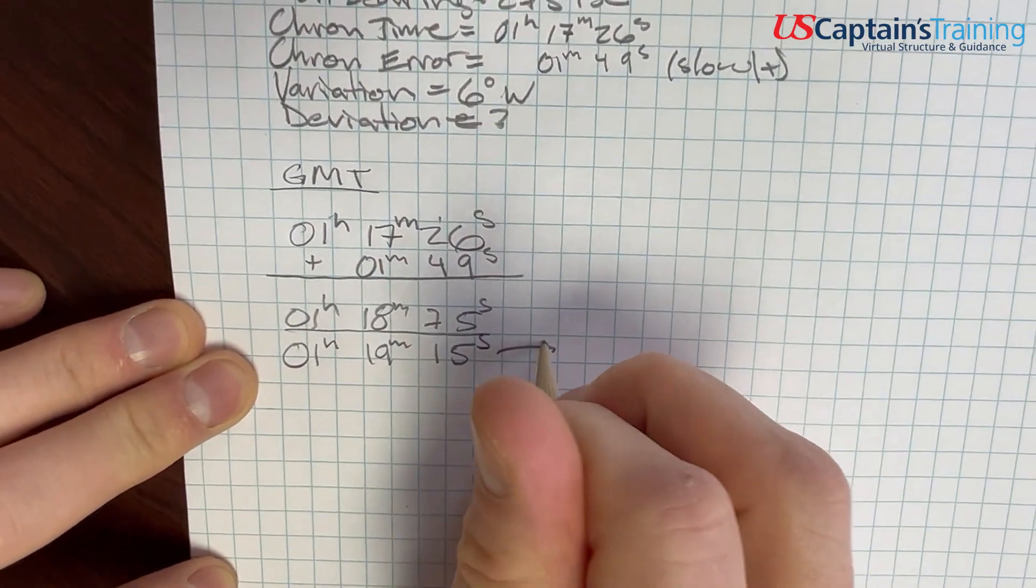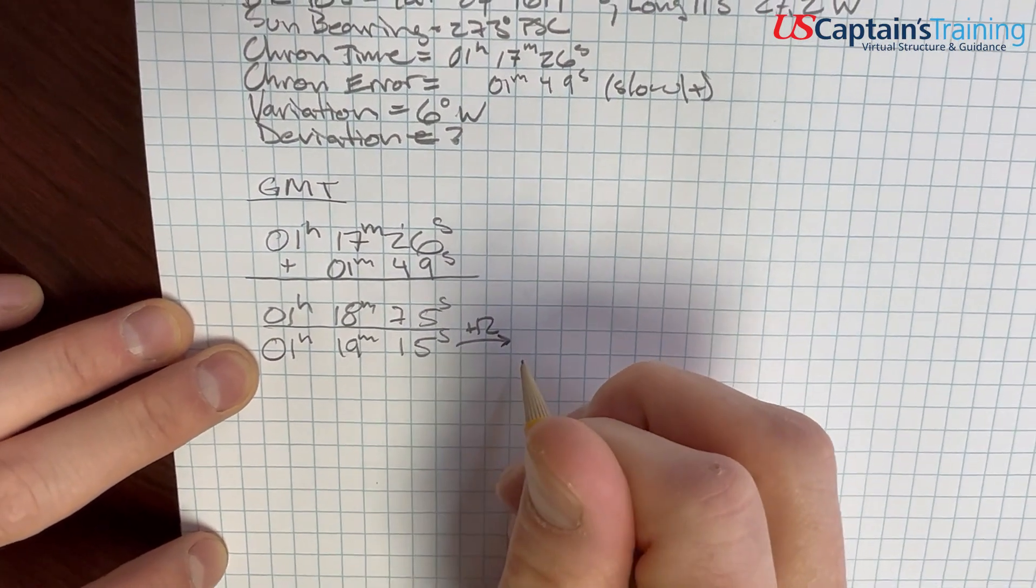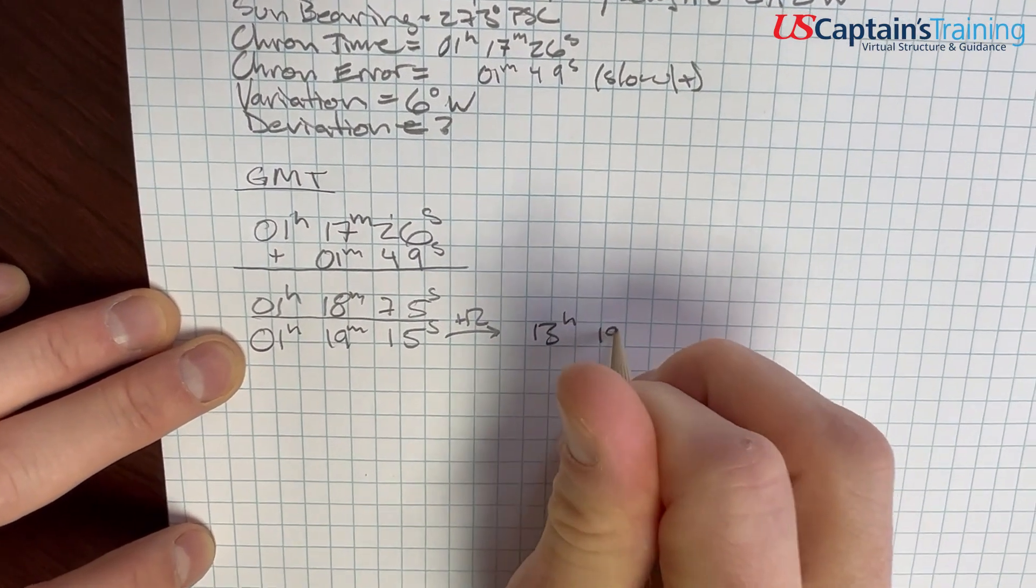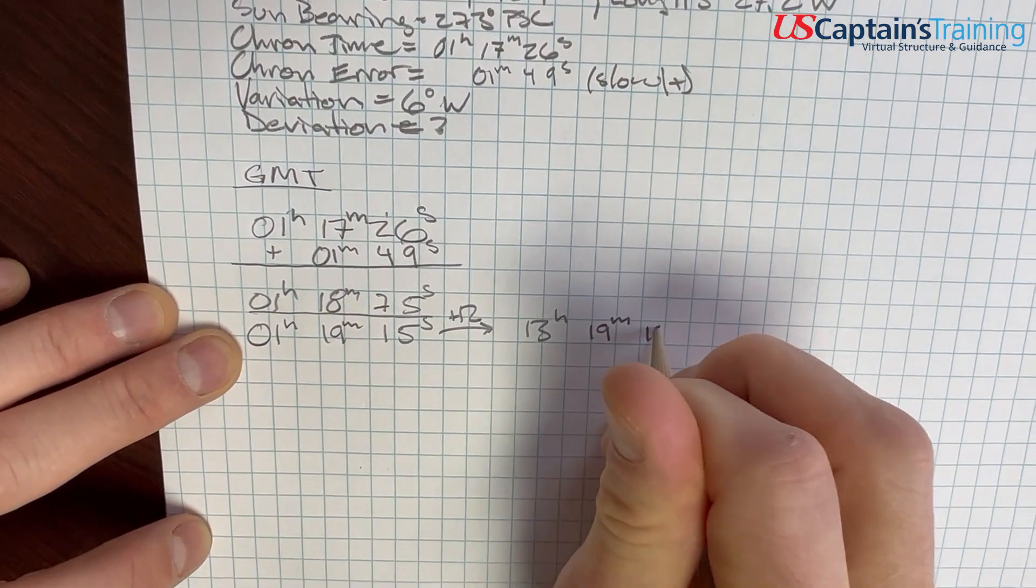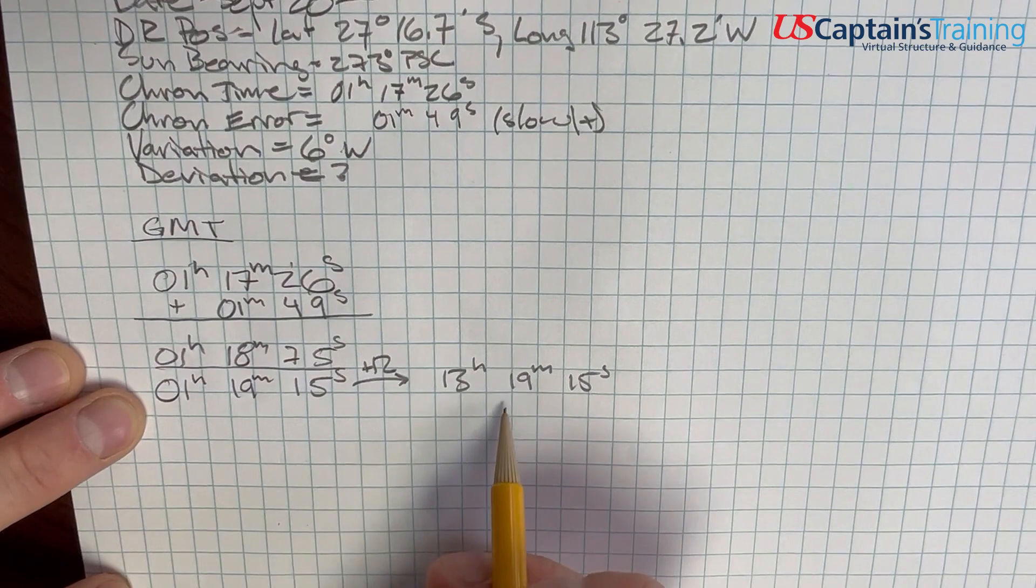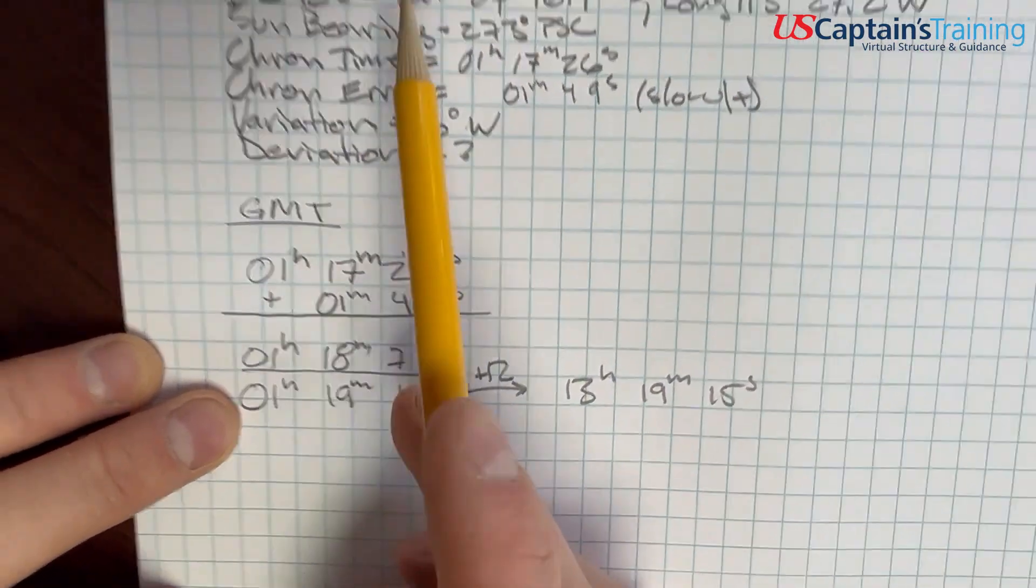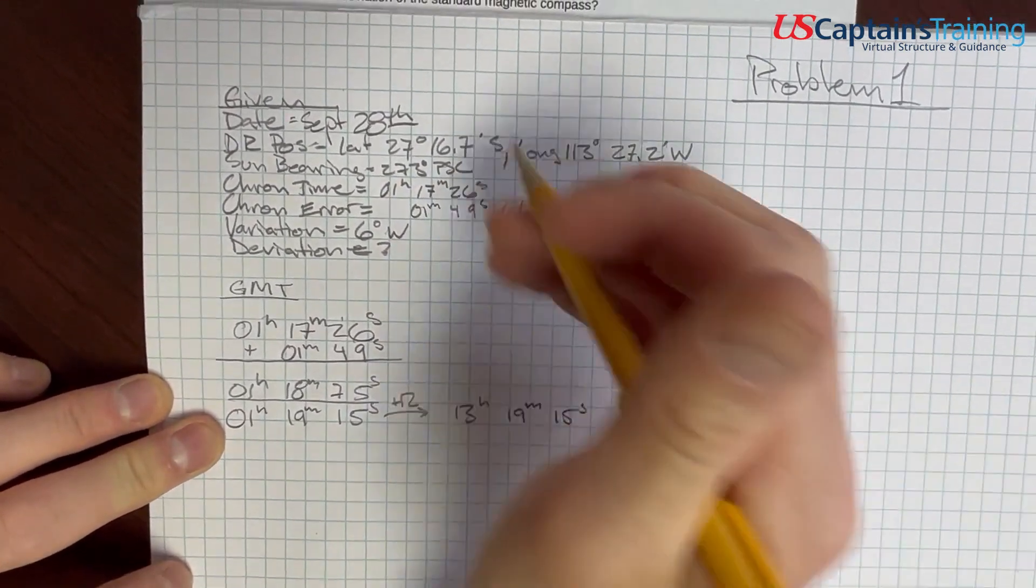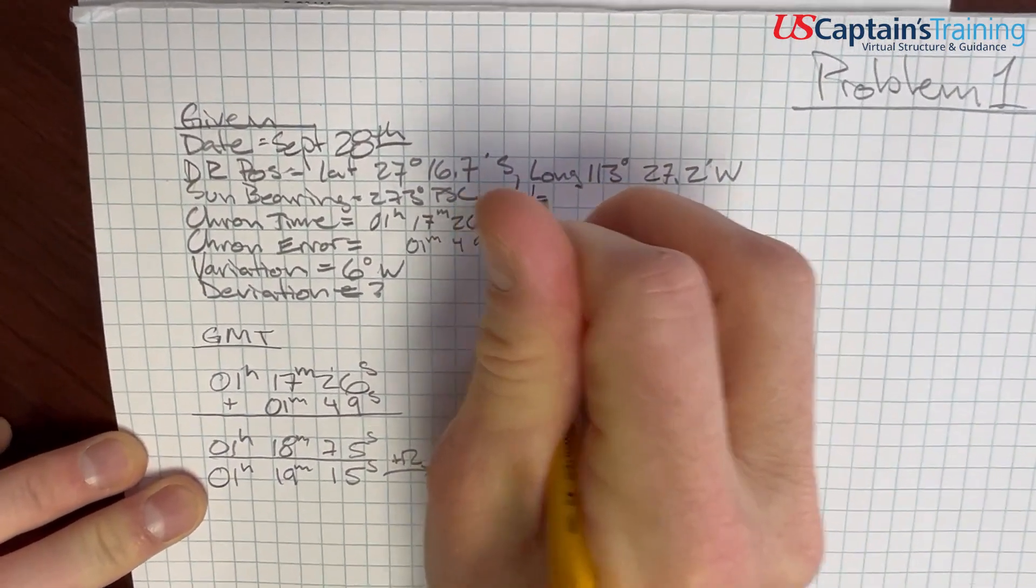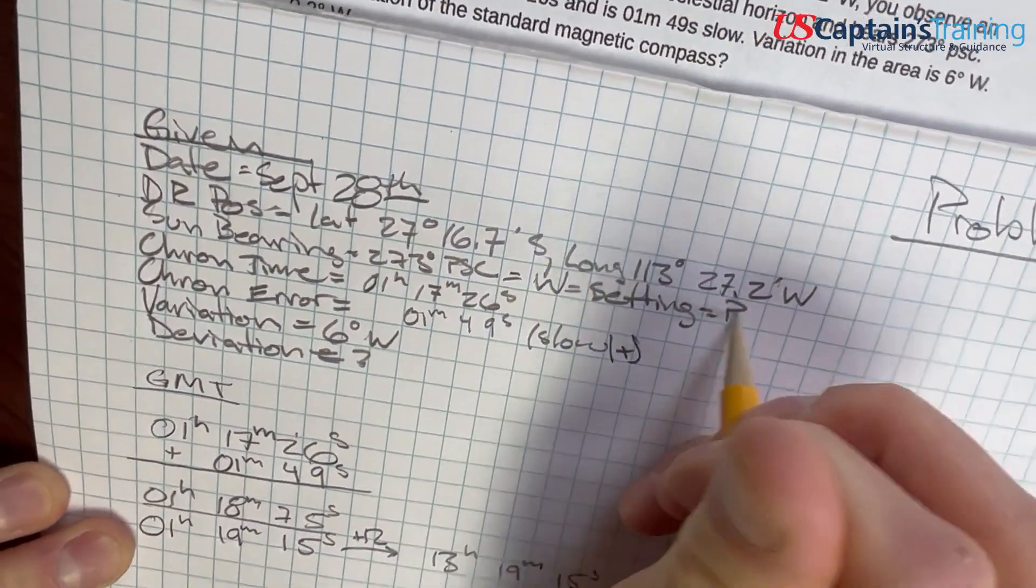There's ambiguity because a chronometer has 12 hours, so it goes around twice a day - AM and PM. We might be at 1h 19m 15s, or if we add 12 hours, 13h 19m 15s. We have to determine which one. Our sun bearing was 273°, which is in the west. That means the sun was setting, which means we are in the PM.